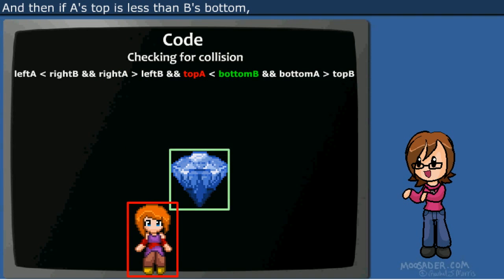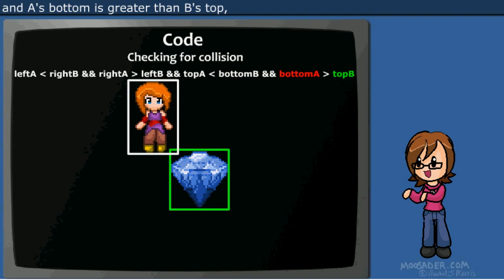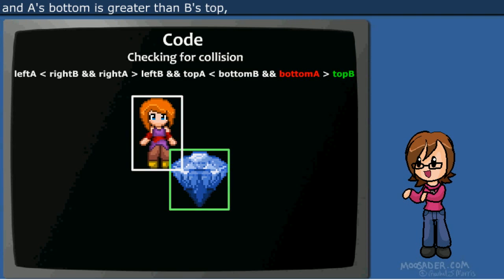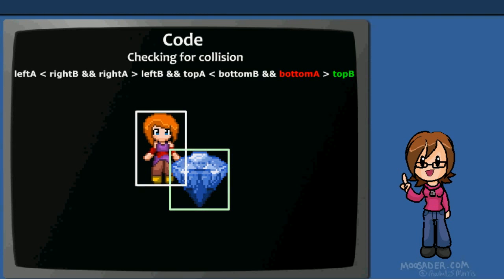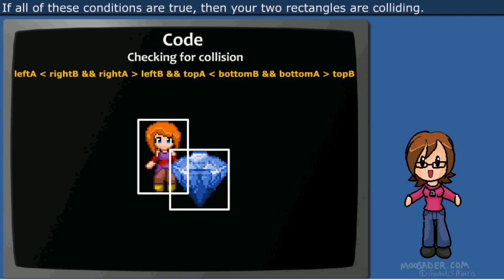And then if A's top is less than B's bottom, and A's bottom is greater than B's top, then there also could be a collision. If all of these conditions are true, then your two rectangles are colliding.